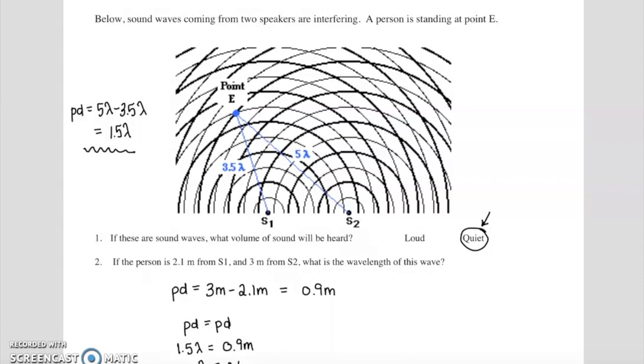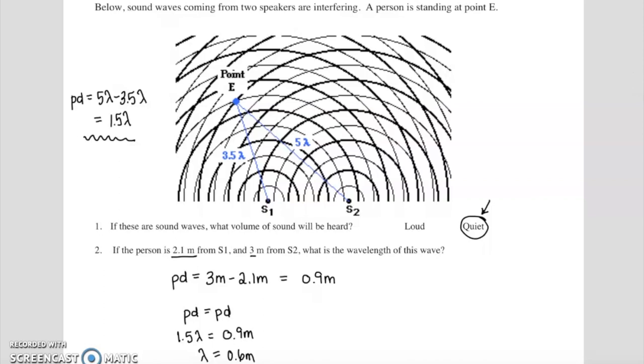You in fact could solve for the wavelength knowing that the person was standing at these distances from the different sources. You could find the wavelength both in terms of meters as well as in terms of lambda. Setting those two equal to each other and solving for lambda, you find the wavelength of 0.6 meters. Again, this should be review from last lecture.